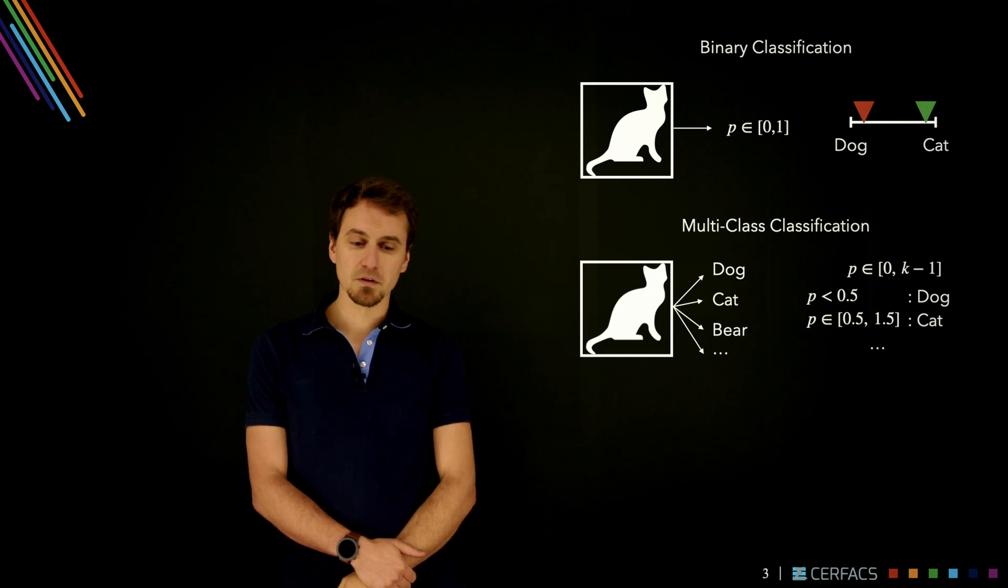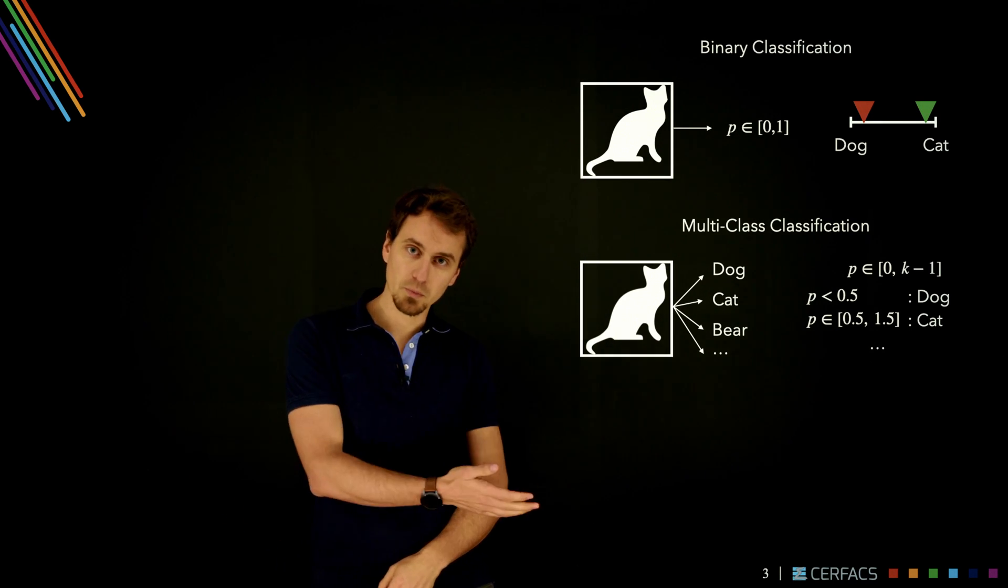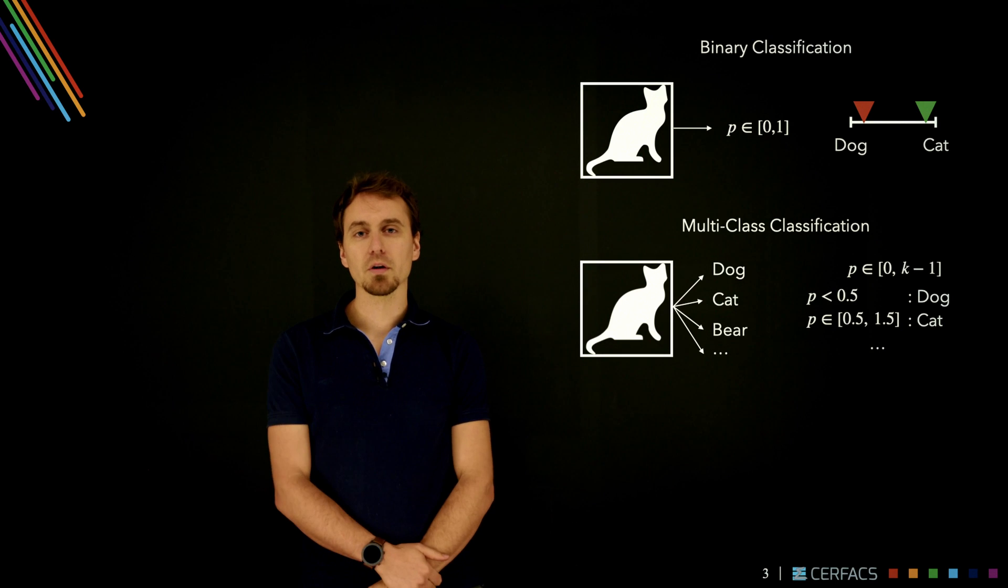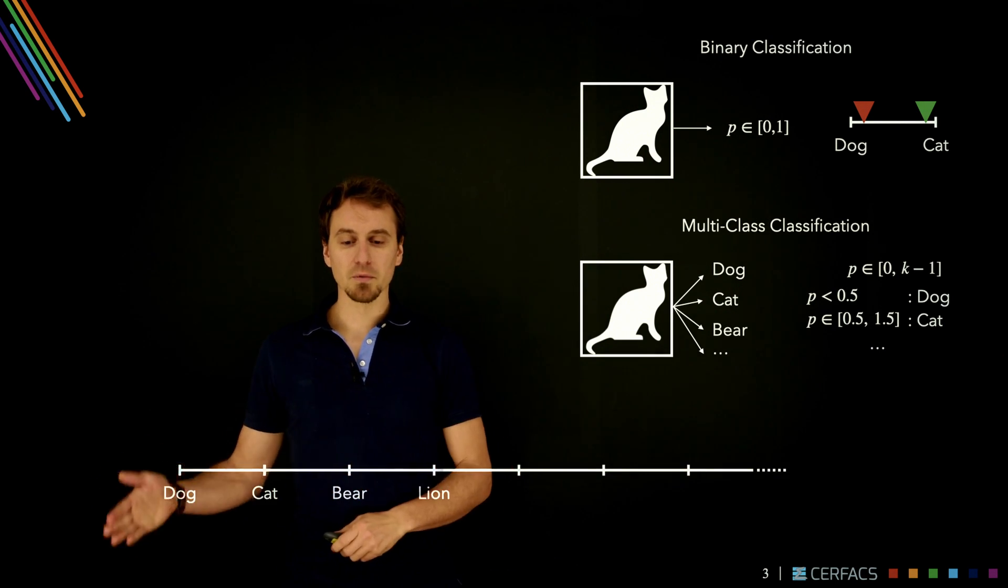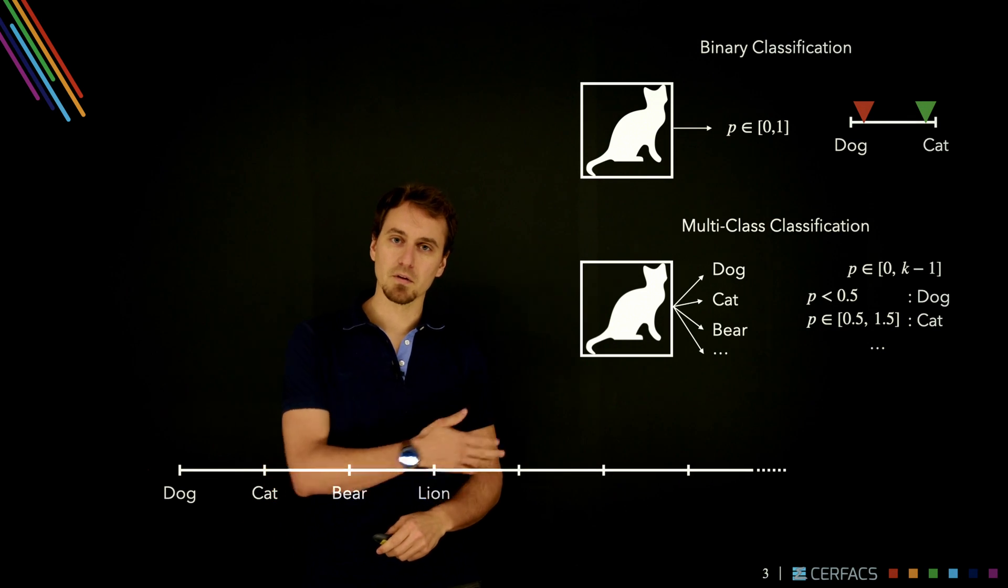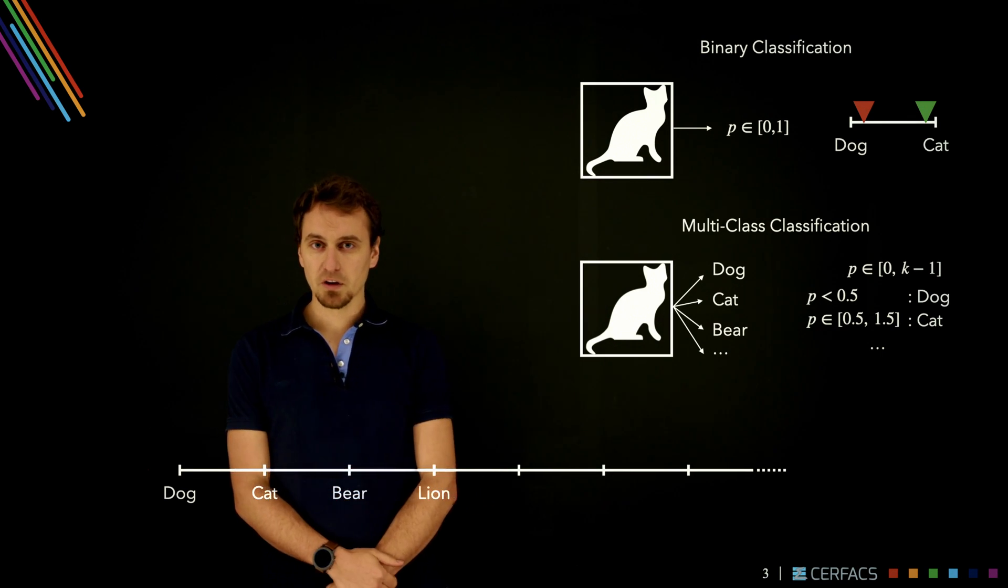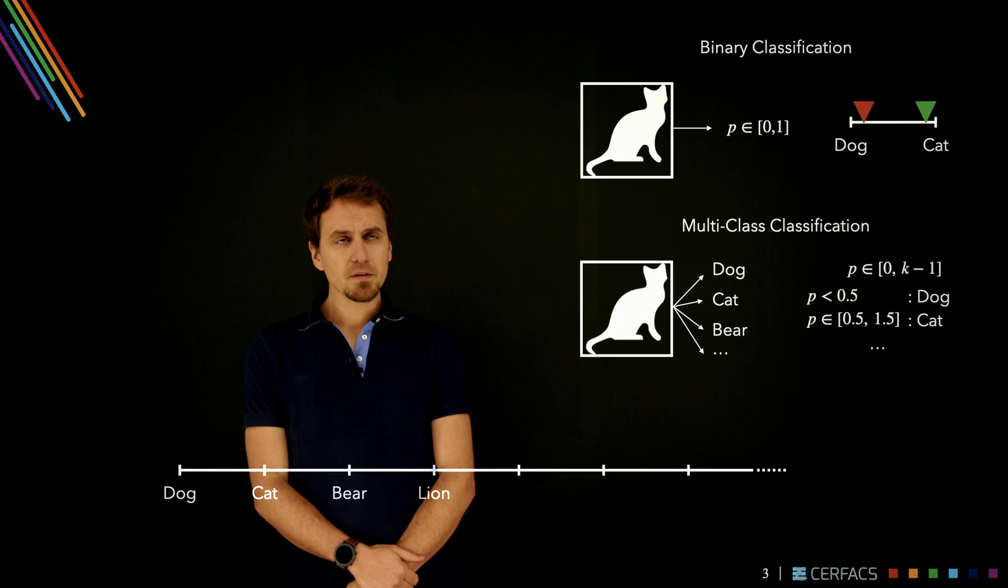We would say if p is less than 0.5 it's a dog, if it's between 0.5 and 1.5 it's a cat, and so on. In essence we would be creating a linear scale here, going from dog to cat to bear, lion, etc., through each integer.